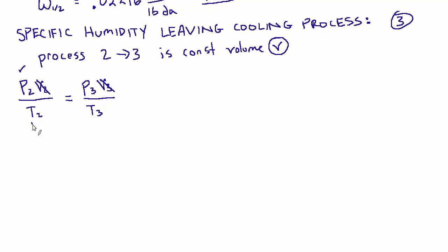And we know the pressure and temperature at two, and we know the temperature at three. The only thing we don't know is the pressure at three, and we'd love to know that. So let's rearrange this to solve for the pressure at three. Pressure at three equals pressure at two times the ratio of the temperatures, T3 over T2. So now let's actually solve for P3.